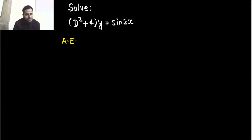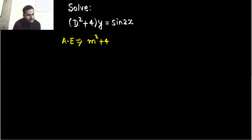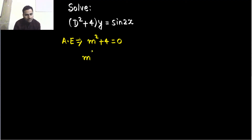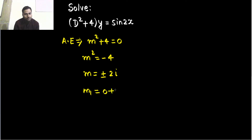How to write the auxiliary equation? What we do is replace capital D by M. So this becomes M squared plus 4. This is what we have inside the bracket. Now equate that equal to 0. So whatever is inside the bracket, replace D by M and equate to 0. Solve it. So M squared equals minus 4, which gives M equals plus or minus 2 iota. So M1 is 0 plus 2 iota and M2 is 0 minus 2 iota.